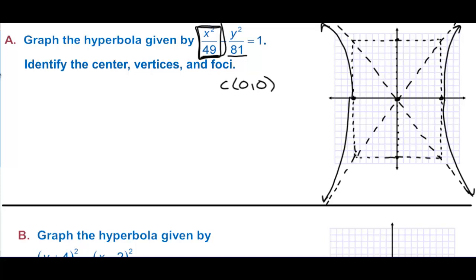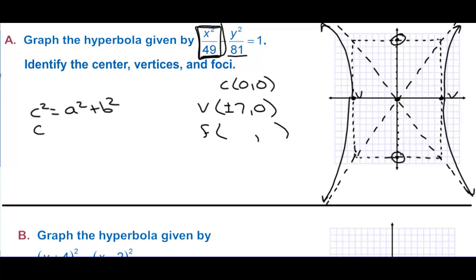We've identified the center. The vertices are at plus or minus seven, zero — those are the vertices because x is first. For the focal points: c squared equals a squared plus b squared, so c squared equals 49 plus 81 equals 130. Therefore c is plus or minus the square root of 130, which is approximately 11.4.